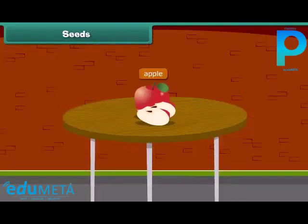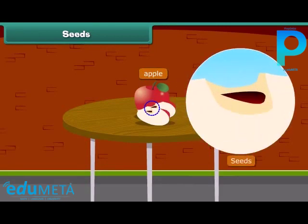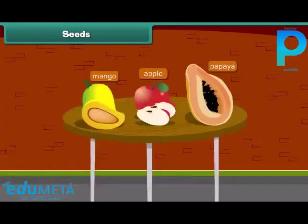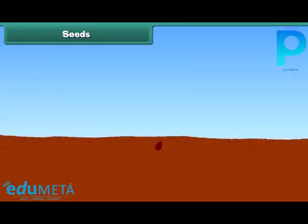When we cut an apple, what do we see at the center? Yes, absolutely right — we see small dark brown seeds. Other fruits have seeds inside them such as papaya and mango. Do you know that a new plant grows from a seed?